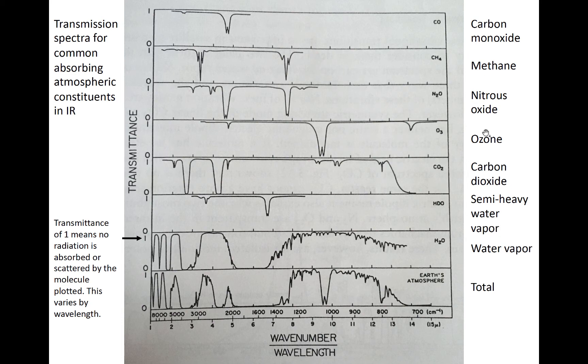For example, ozone, shown in the fourth row, is not transparent around 9.5 microns. This is because ozone absorbs radiation at this wavelength. The bottom row contains the sum effects of all atmospheric constituents.